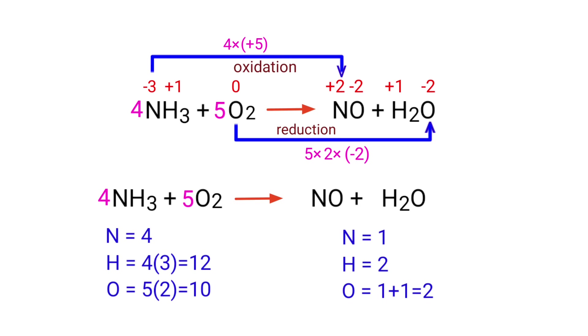On the reactant side there are 4 nitrogen atoms, 12 hydrogen atoms and 10 oxygen atoms. On the product side there is 1 nitrogen atom, 2 hydrogen atoms and 2 oxygen atoms. The number of atoms are not balanced on both sides. To balance the chemical equation we need to make use of coefficients. A coefficient is a number that we place in front of a chemical formula.